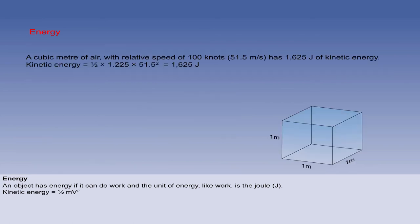Now let's consider the relative motion between still air and a flying aeroplane. Relative to an aeroplane flying at 100 knots, which is 51.5 metres per second, a cubic metre of air has 1625 joules of kinetic energy.